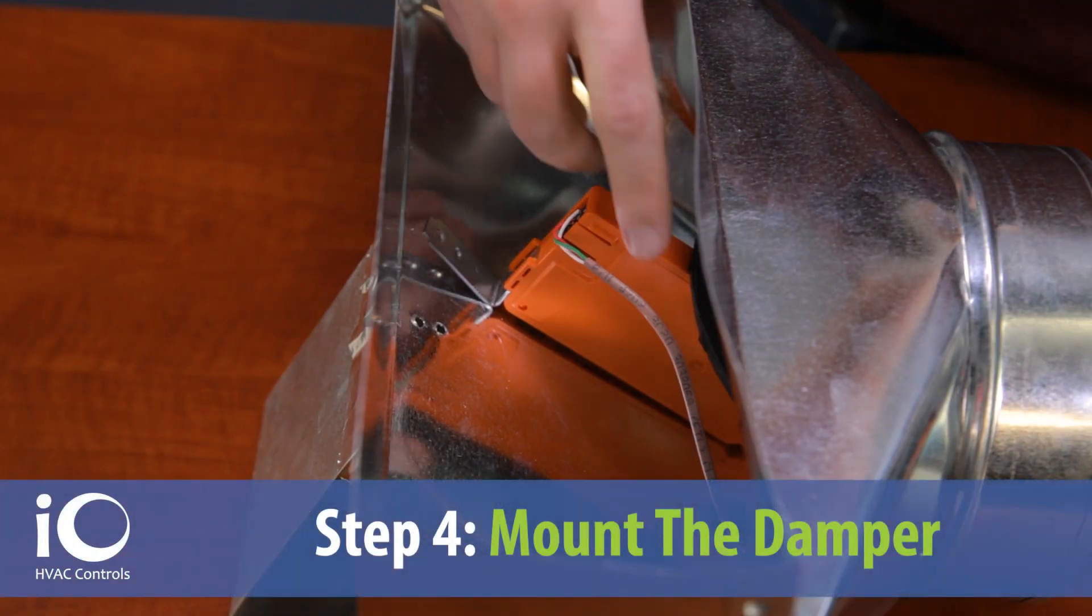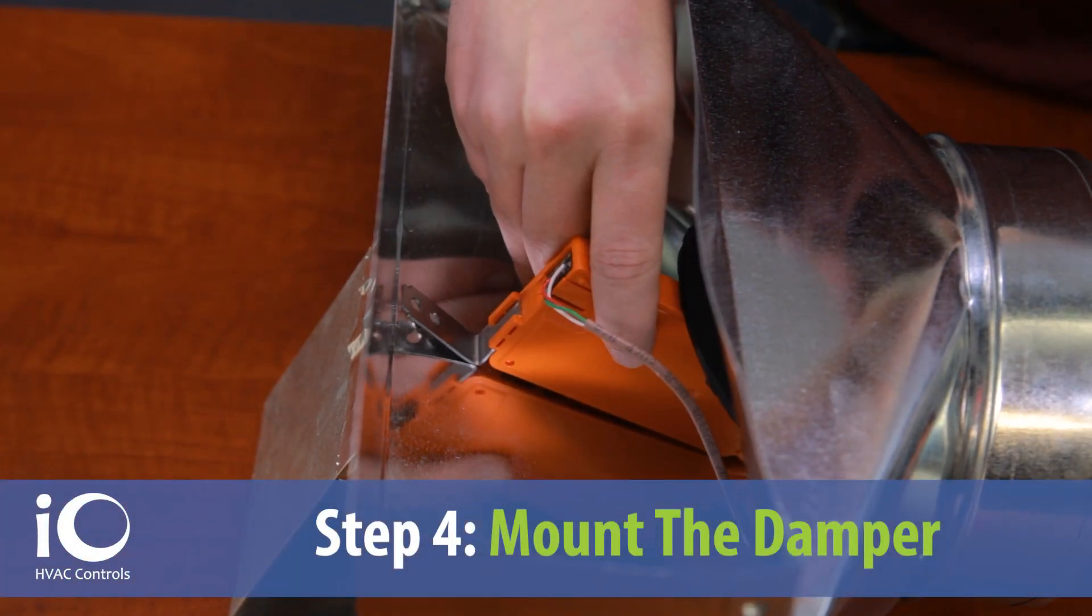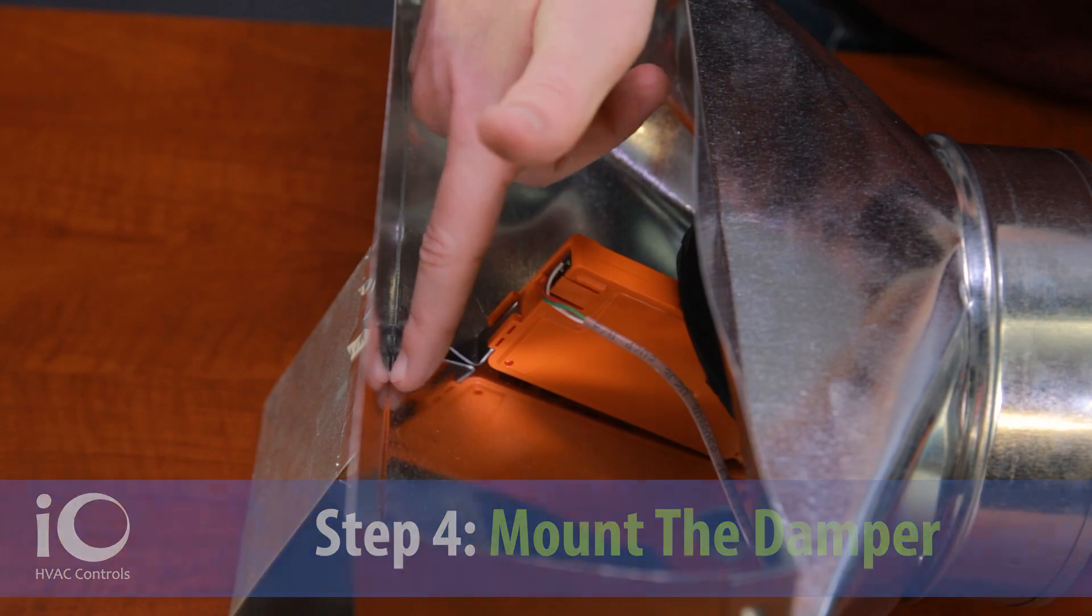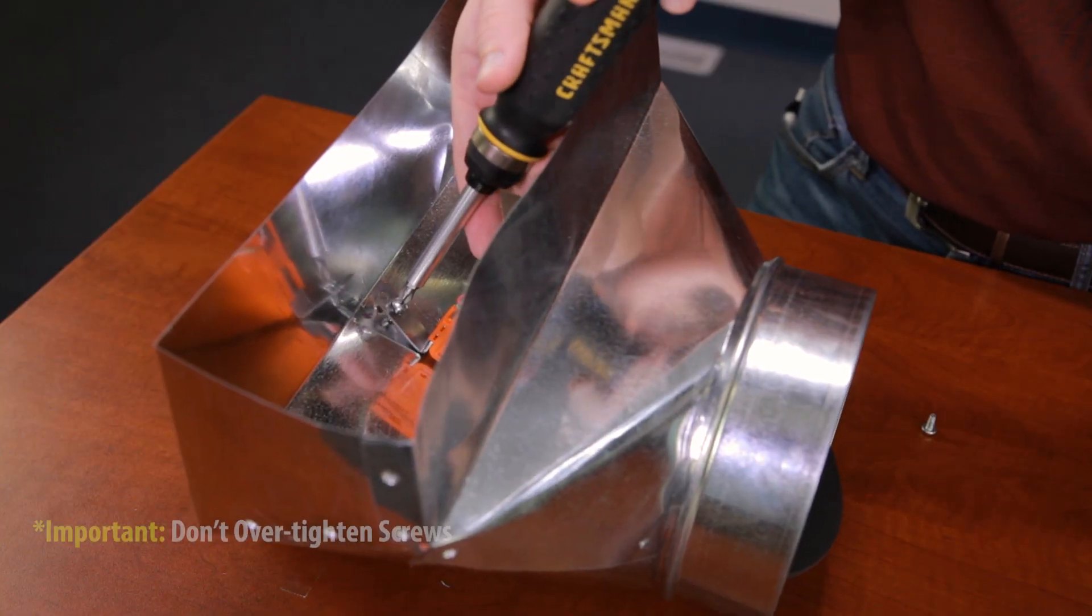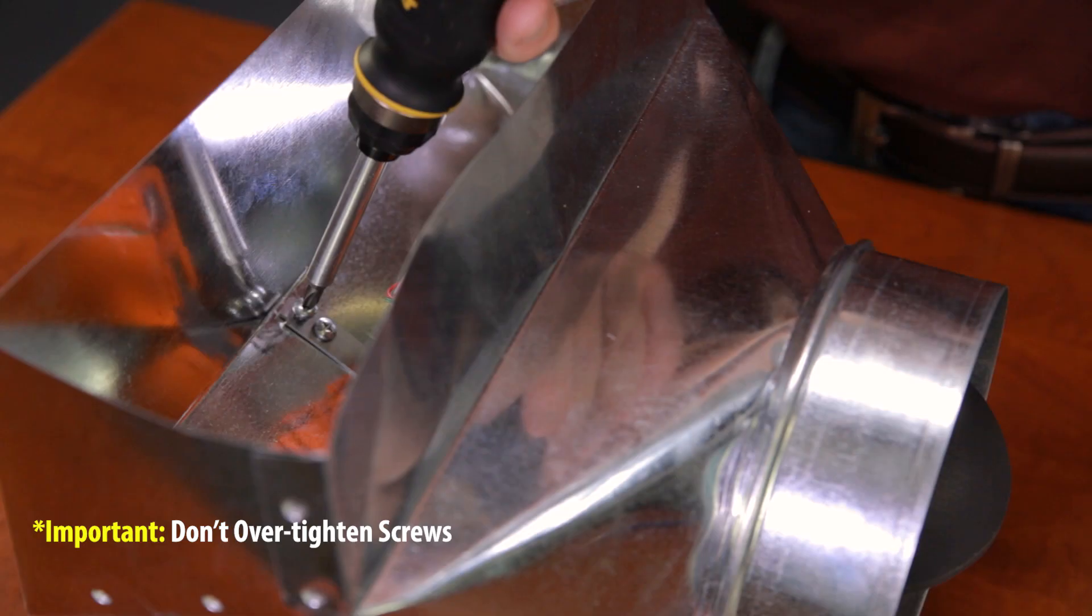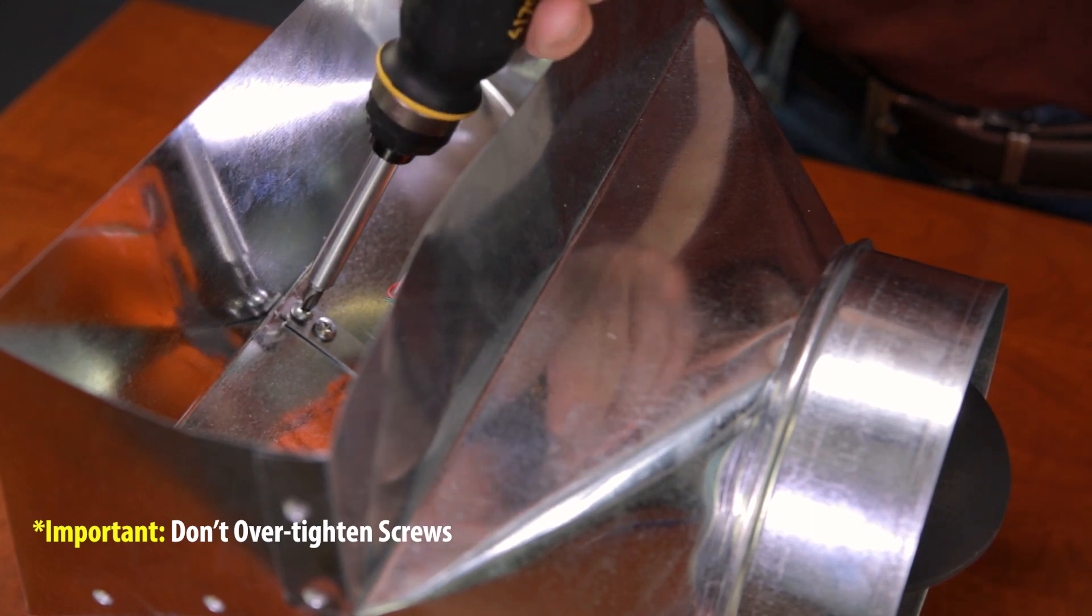Step 4. Position the damper mounting bracket in the center of the boot with the end butted against the transition seam and use the included 32 thread per inch screws to secure the bracket to the boot.